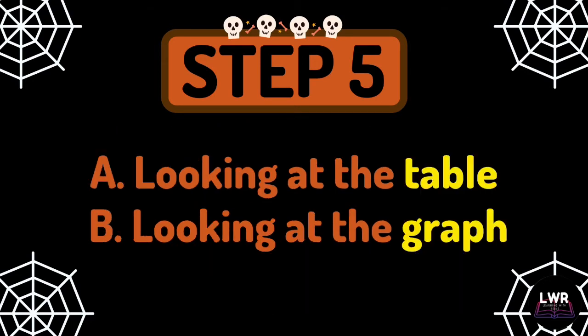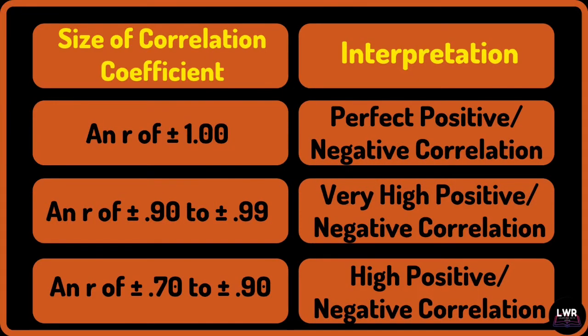We can interpret the value of r by either looking at the table or by looking at the graph. Let us first look at the table. An r of positive or negative 1 is a perfect positive or negative correlation.